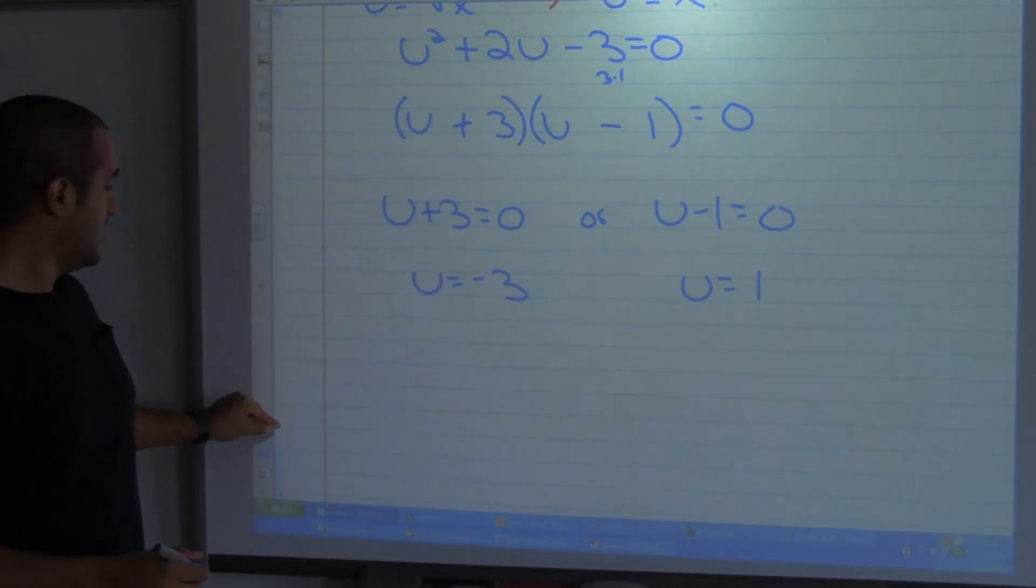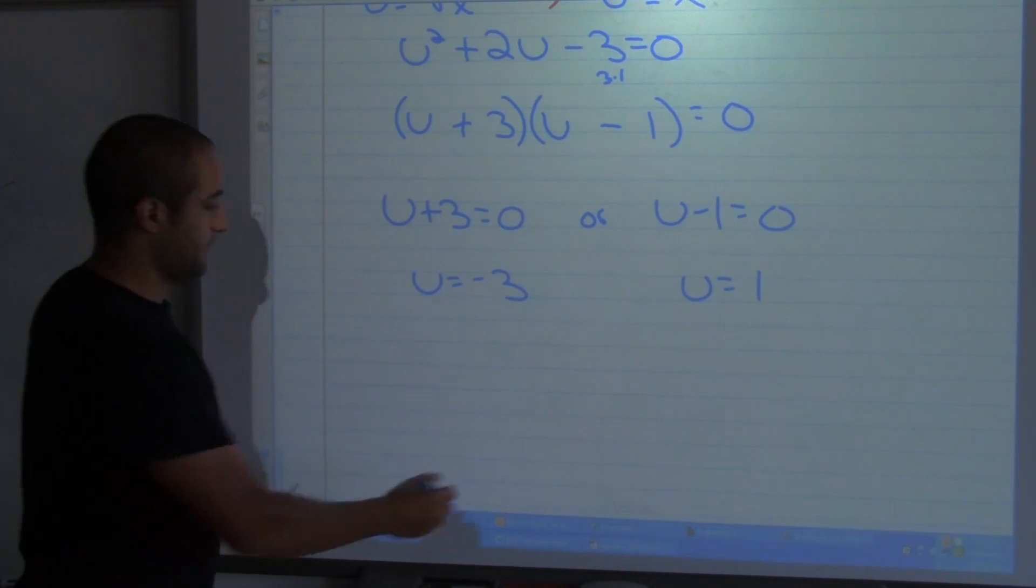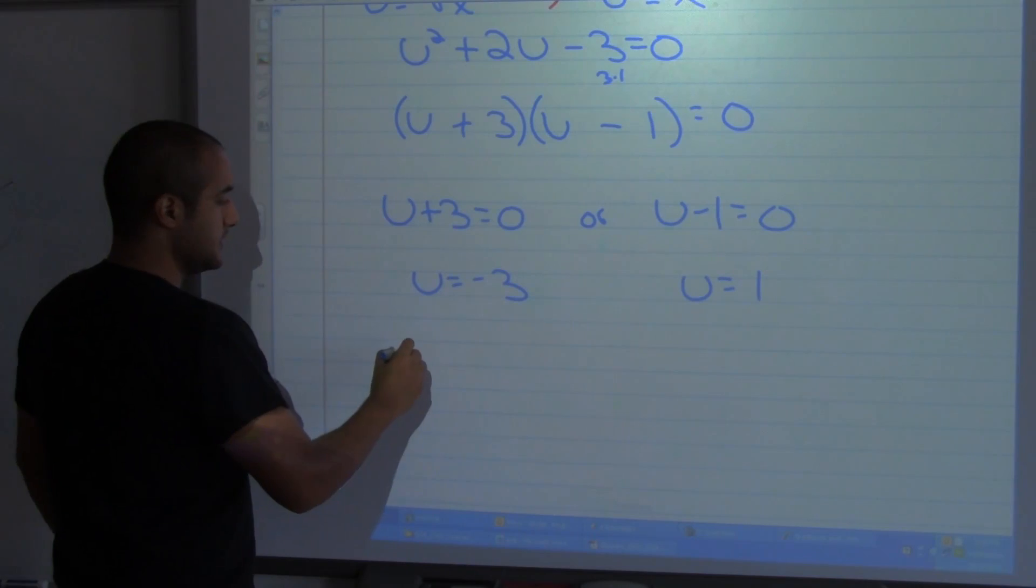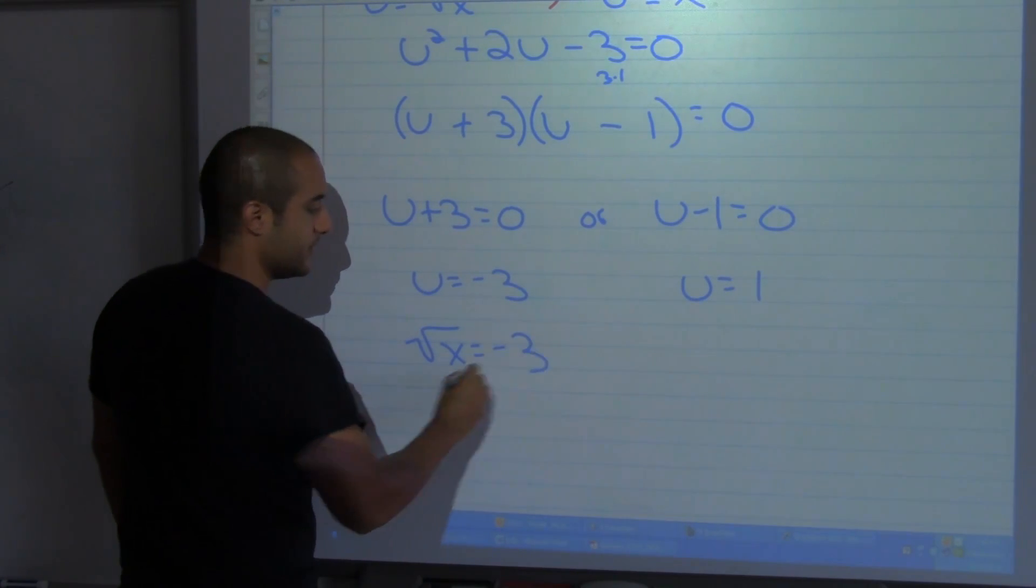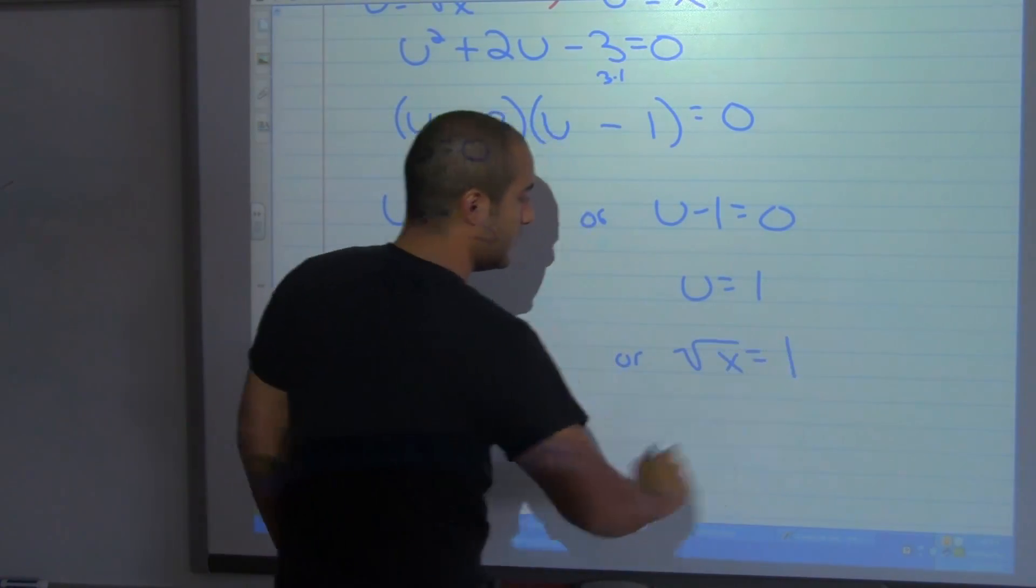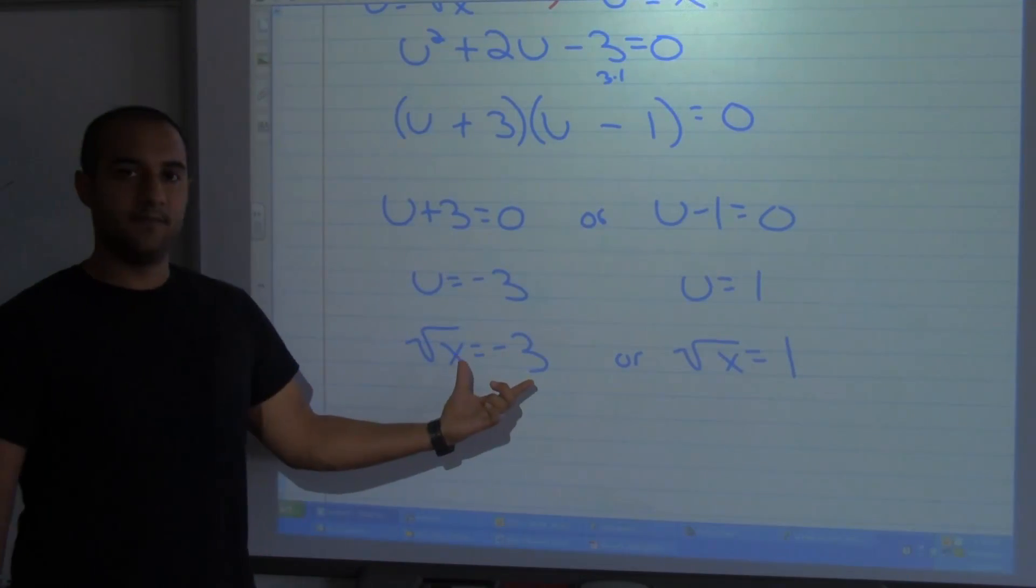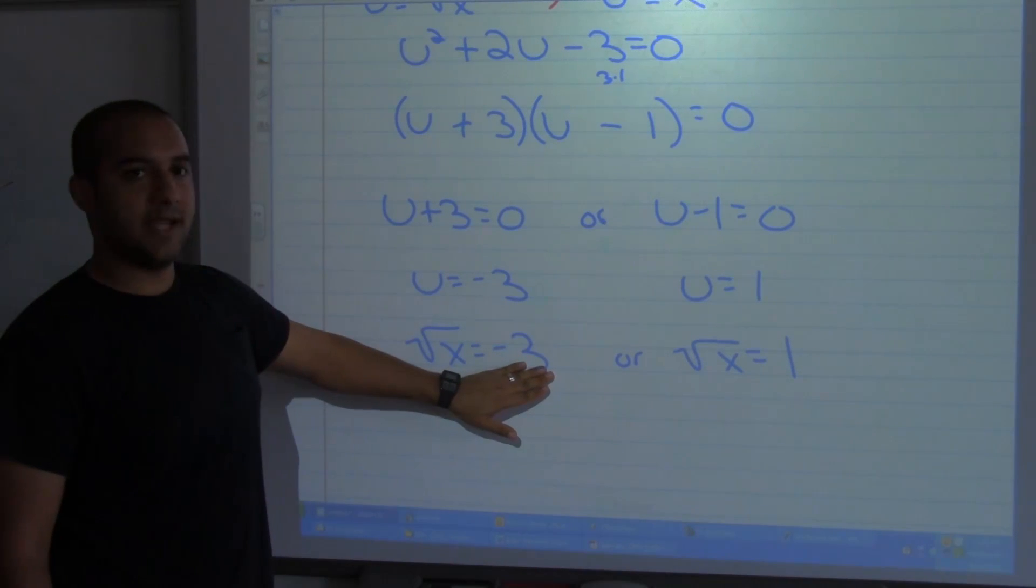But I don't want u, I need to take this back into my substitution. So this implies that the square root of x is equal to negative 3 or the square root of x is equal to 1. Now let's think about what this says. This one's saying that the square root of a number is a negative.